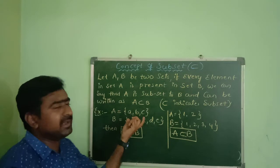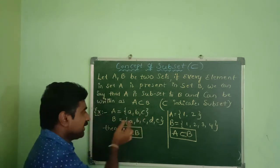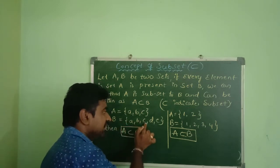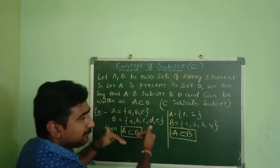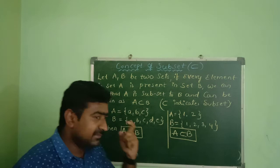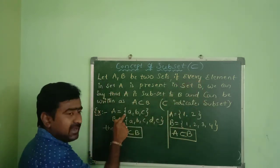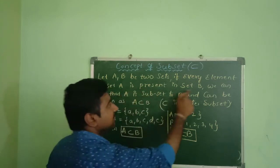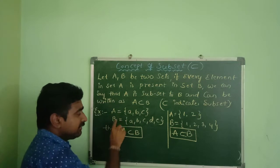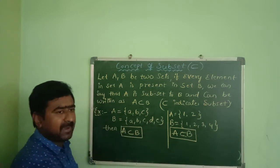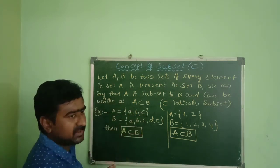For example, let set A equal to {a, b, c} and set B equal to {a, b, c, d, e}. Now we can apply the subset definition. Every element in set A — that is a, b, c — is present in set B. Therefore we can say that A is a subset of B. That is the indication written using the subset symbol.